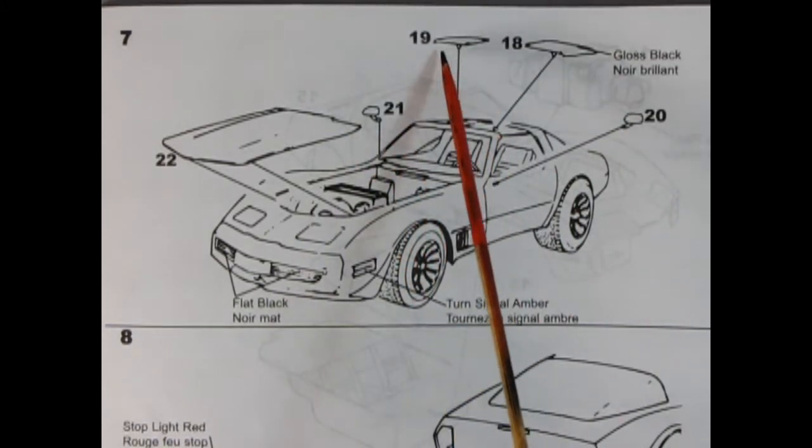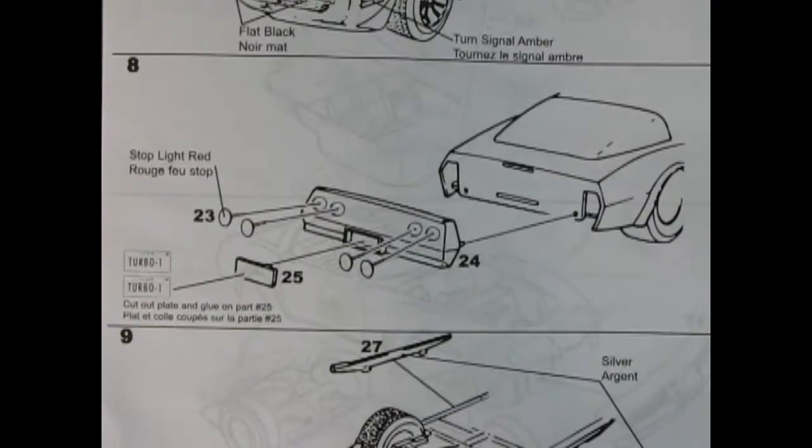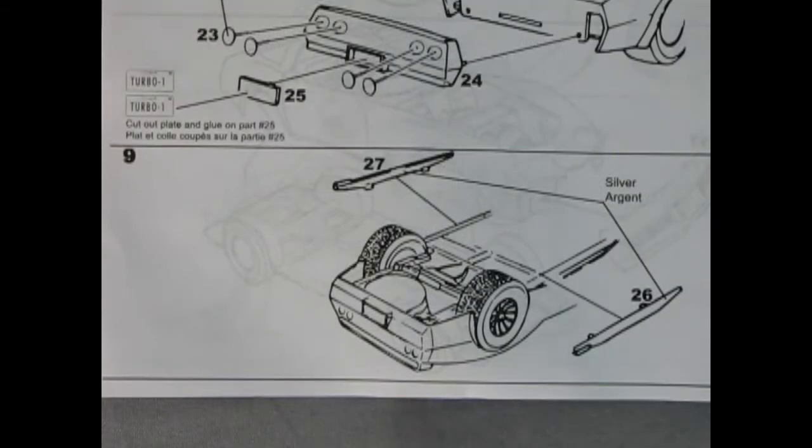Panel 8 shows the rear bumper being pushed into place with our four red Corvette tail lamps going on, and then our license plate. And here it says to cut out plate and glue on part number 25. These say Iowa Turbo 1. Then once you get the back end figured out, all you need to do is put on these nice side pipes and you're ready to roll.